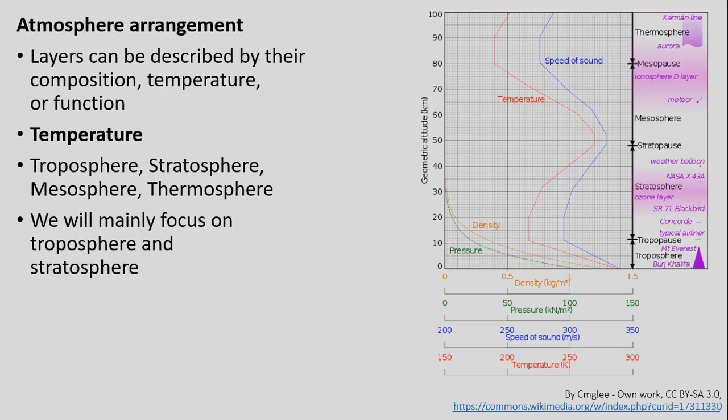There are several ways we can talk about arranging or layering the atmosphere to study it. Three common ways are by atmospheric composition, the atmosphere's temperature, or the atmosphere's function. We'll mainly be focused on temperature and function. Based on temperature, we have four divisions generally used for layering.